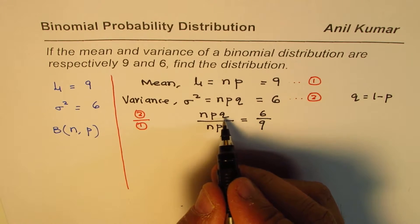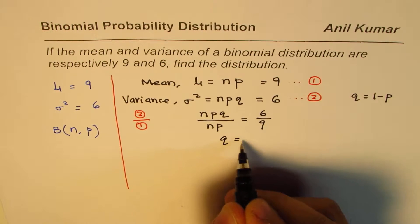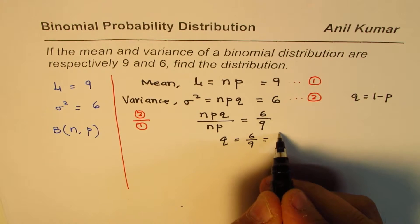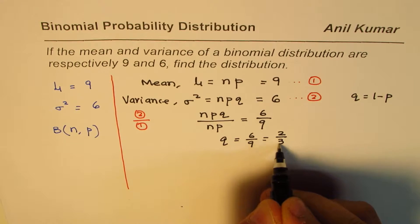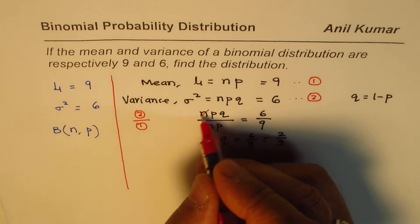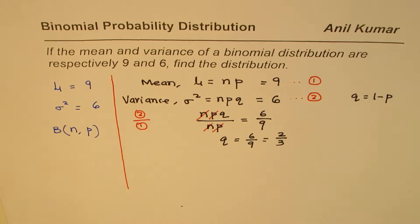Clearly from here we get the value of q which equals 6 over 9, which can be simplified as 2 over 3. When we divide, n gets cancelled with n, p gets cancelled with p, so q equals 6 over 9, which is 2 over 3.